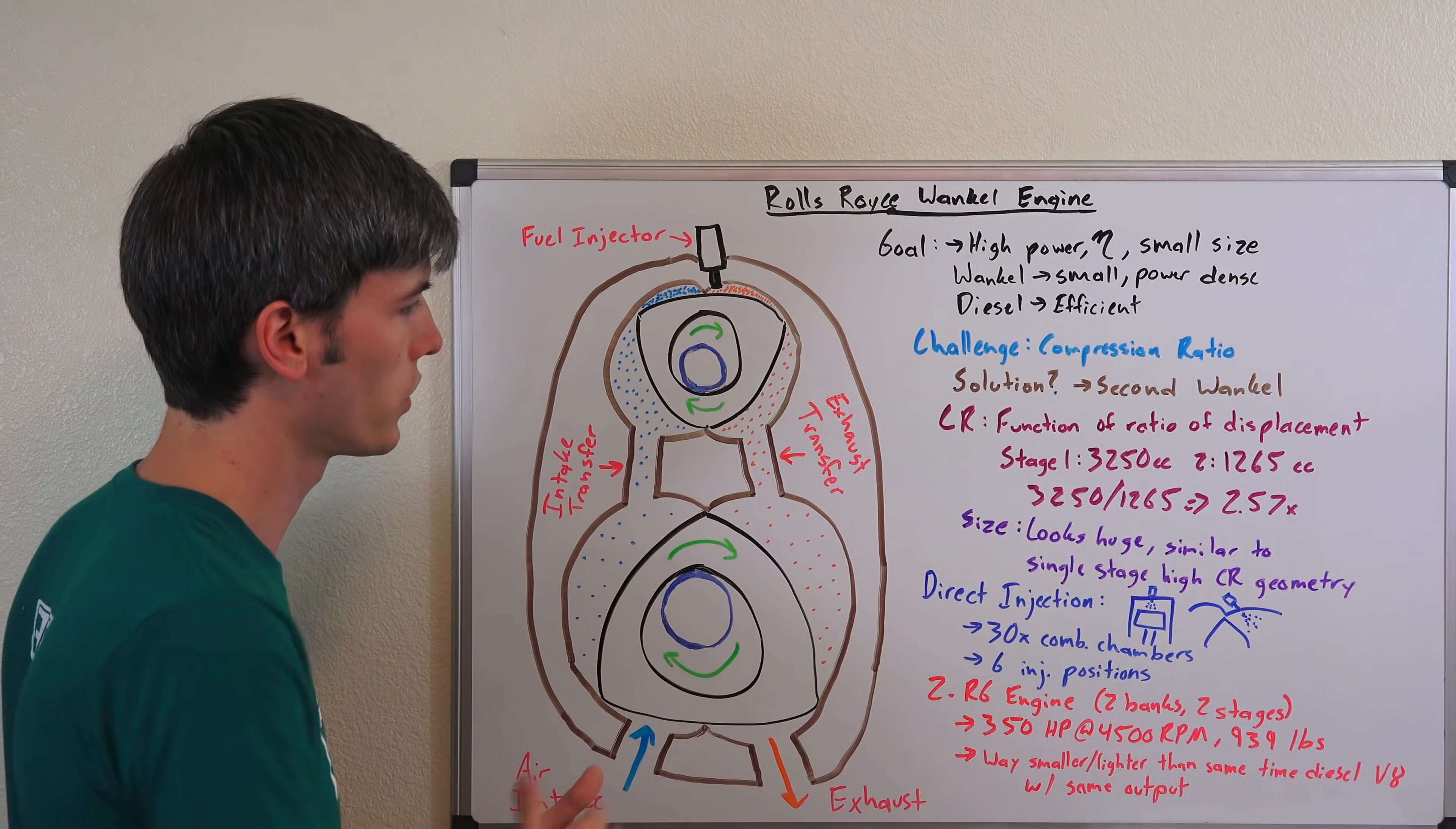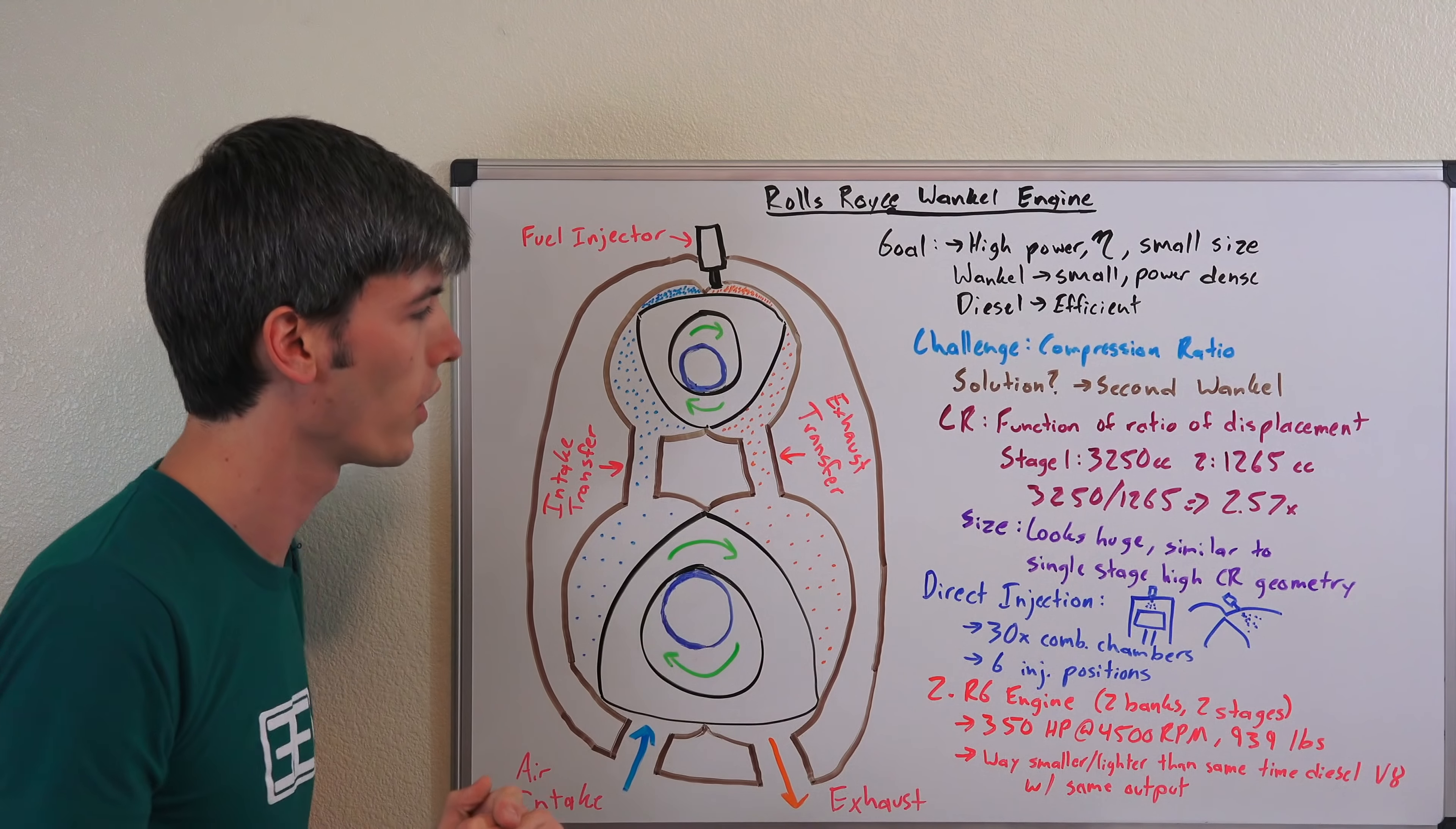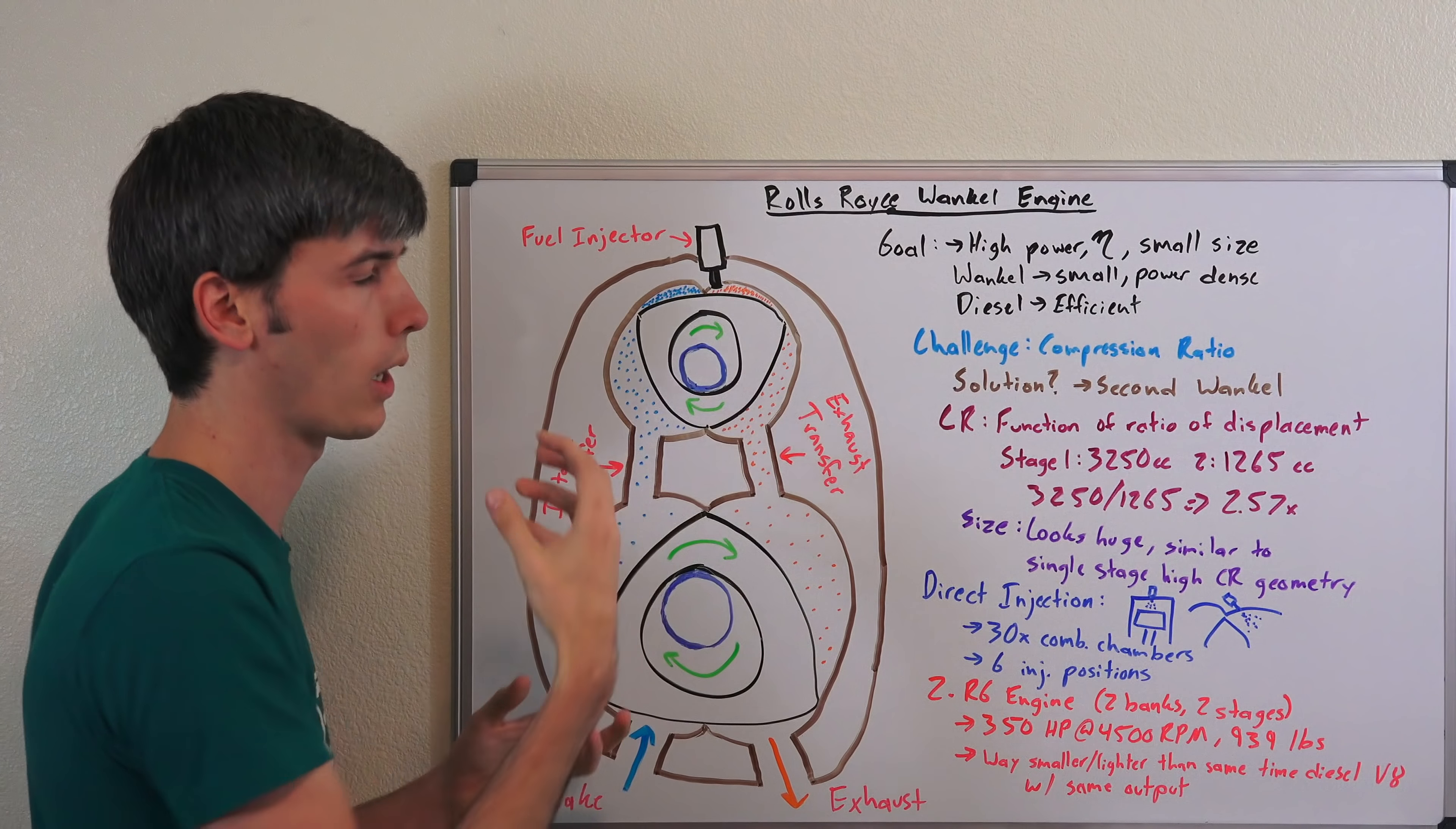Another challenge they ran into is they decided to use direct injection, but there wasn't too much research out there on using direct injection in diesel Wankel engines. So they ended up trying 30 different combinations for combustion chambers, they tried six different injector positions. Basically over a hundred different combinations that they tried out and settled on one that worked best. Much easier in a piston cylinder device to just have that injector directly on top as that piston comes up right in the middle of that circle, perfectly distributes the fuel. Having that Wankel sweep by is much more challenging in order to have that perfect air-fuel mixture and then have that ignite when you inject that fuel.